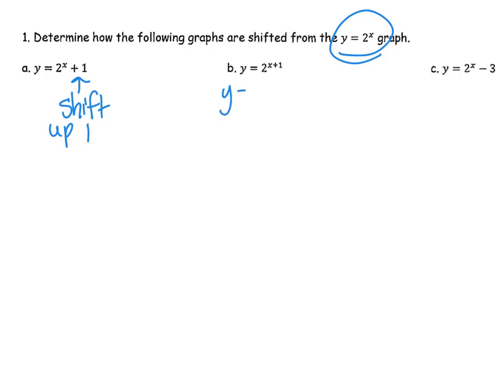I want to remind you on b: the x plus one is going to be the opposite sign. I put it in parentheses to trigger your brain — the sign is going to be the opposite. So here we've got shifting one to the left. Even though it's a plus one, it goes one to the left.